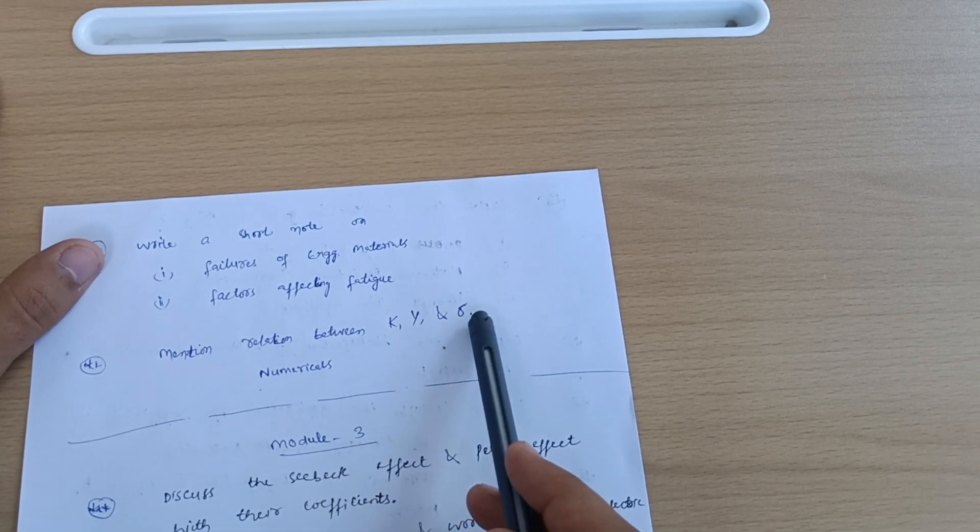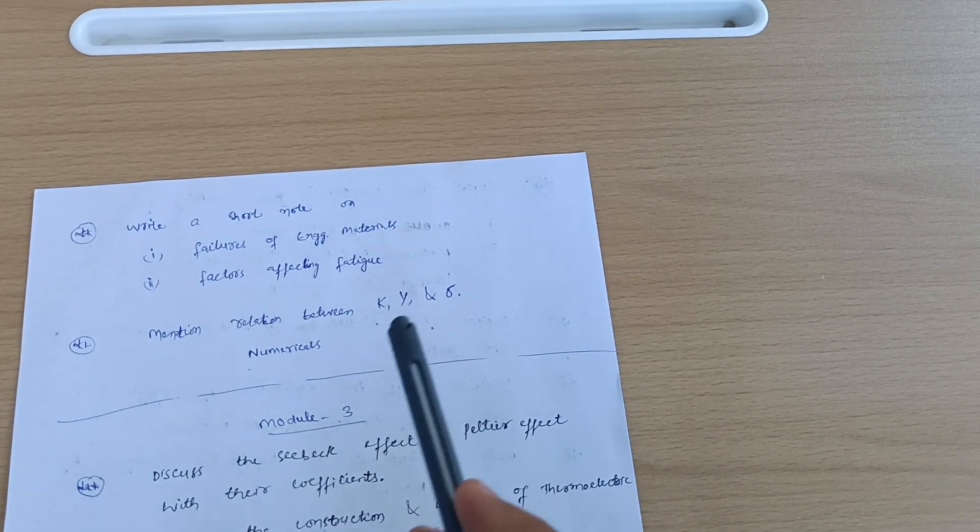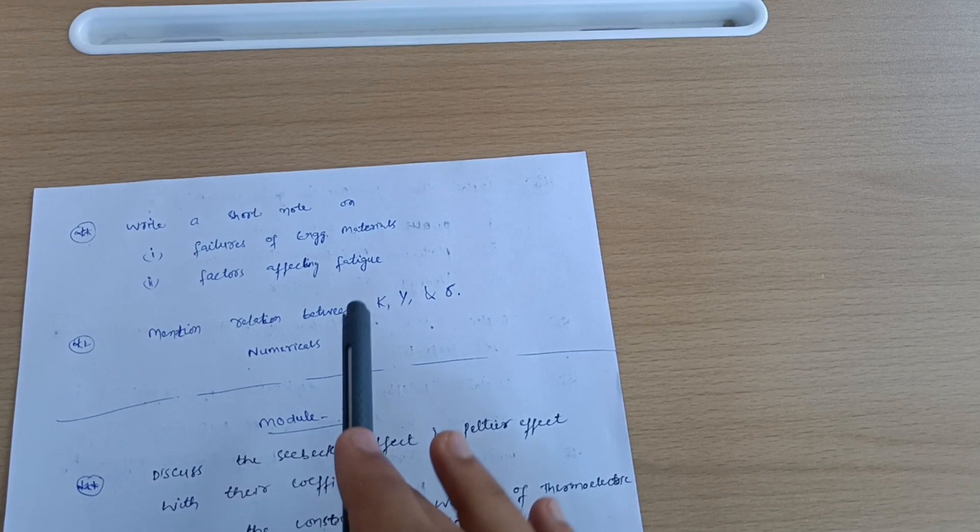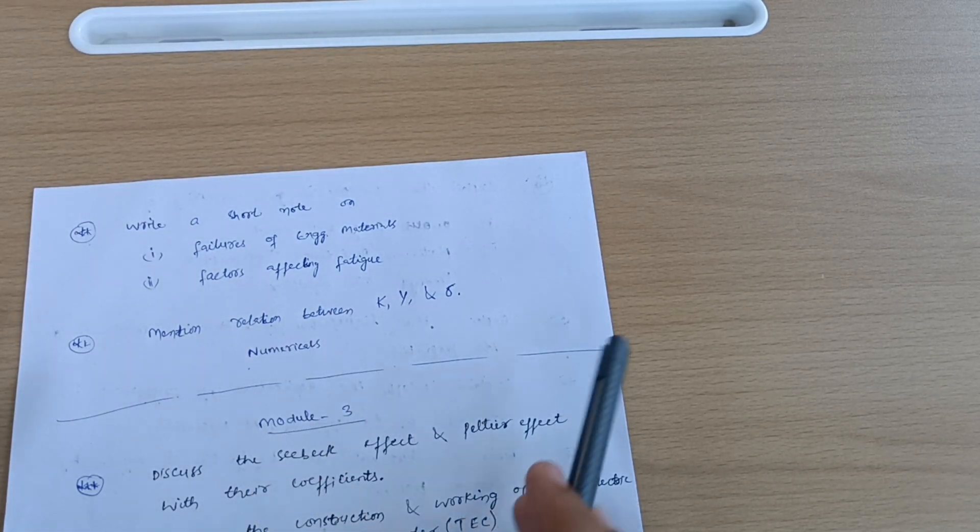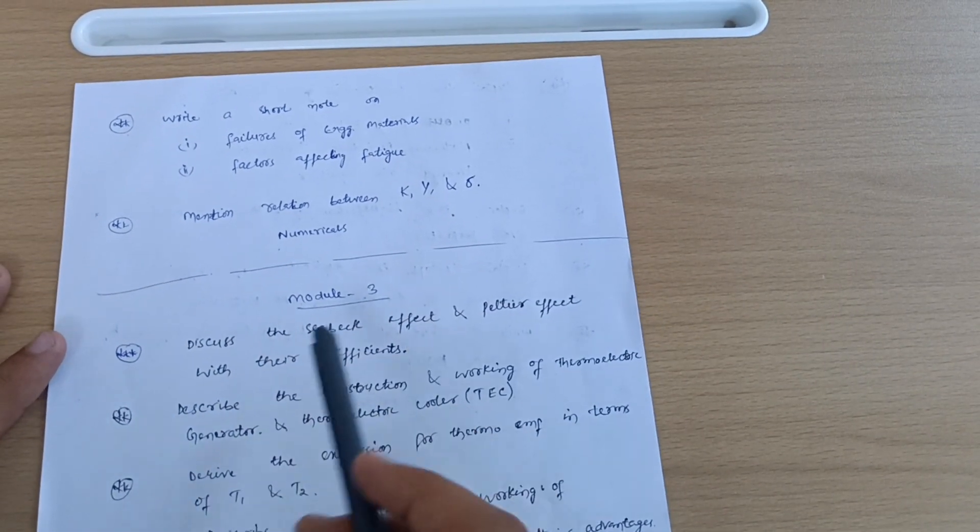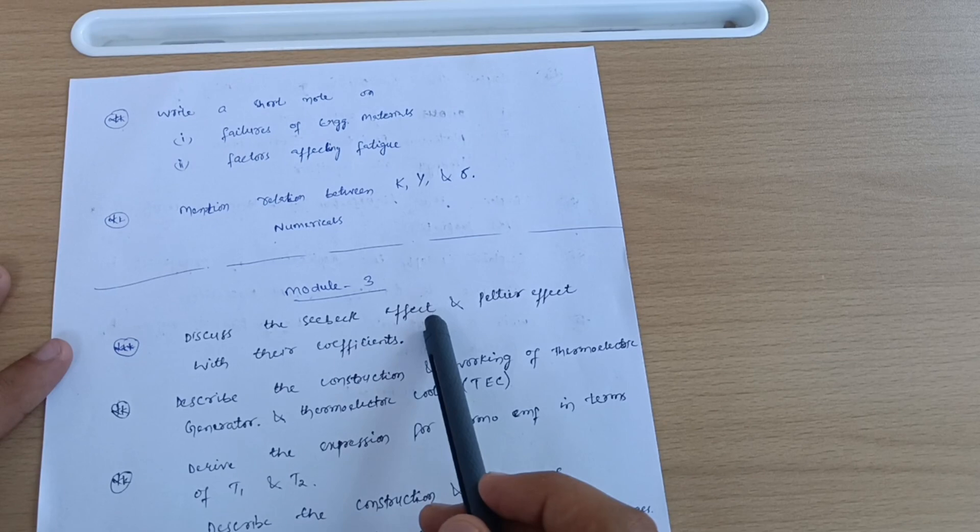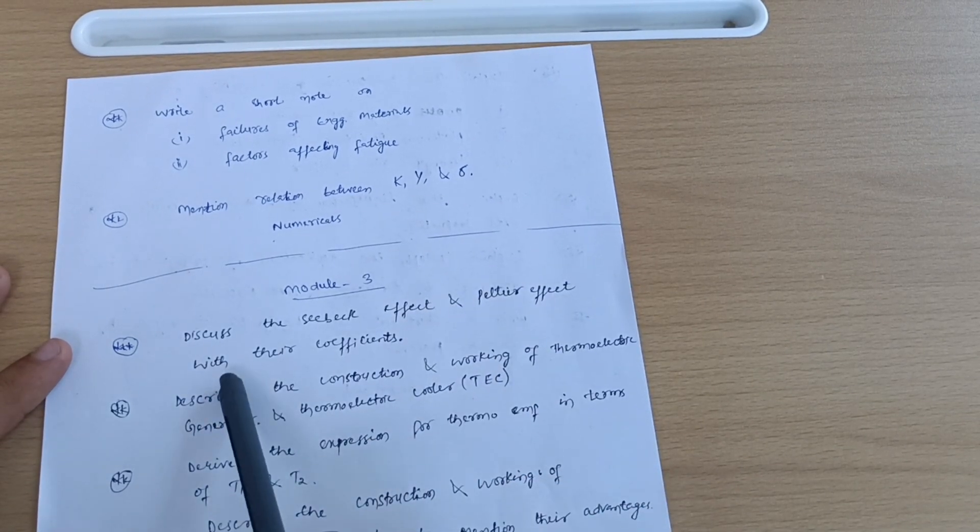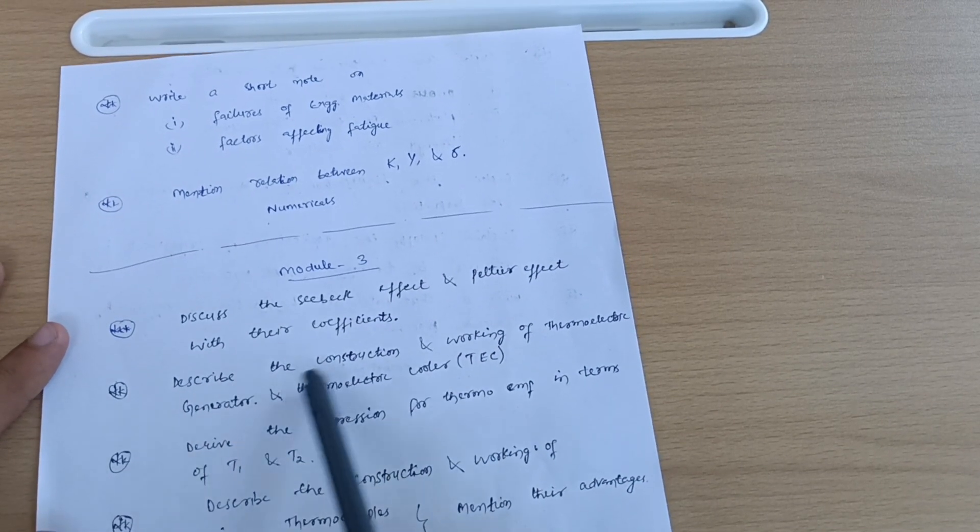Some definitions are there: define elastic moduli, Poisson's ratio and limiting values of Poisson's ratio, stress hardening and softening. Write a short note on failures of engineering materials and factors affecting fatigue. Last question: mention relationship between bulk modulus, Young's modulus and Poisson's ratio. Also numericals are there - if you find easiness in the numericals, then go through it.